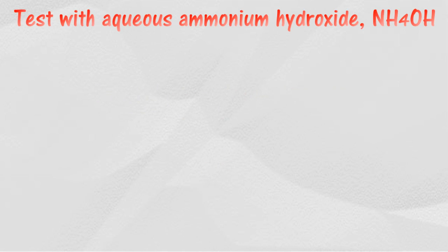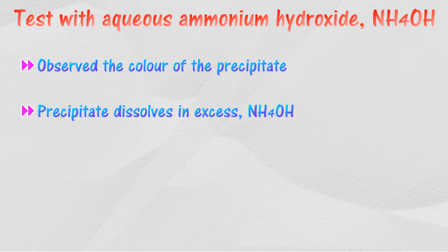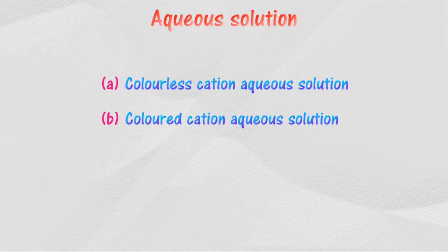Ammonium hydroxide is often used to identify cations during qualitative analysis. Ammonium hydroxide provides hydroxide ions to combine with the cations. Cations can be identified by observing the color of the precipitate formed and whether or not the precipitate dissolves in excess ammonium hydroxide. In aqueous solution, cations can be classified into colorless cation aqueous solution and colored cation aqueous solution.